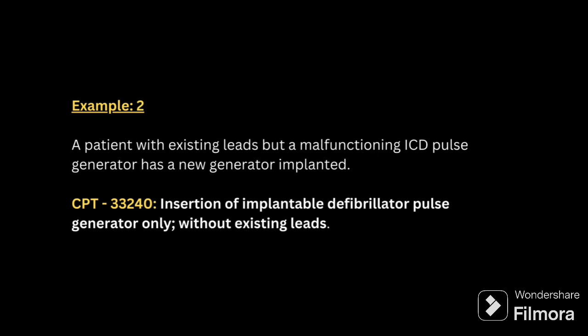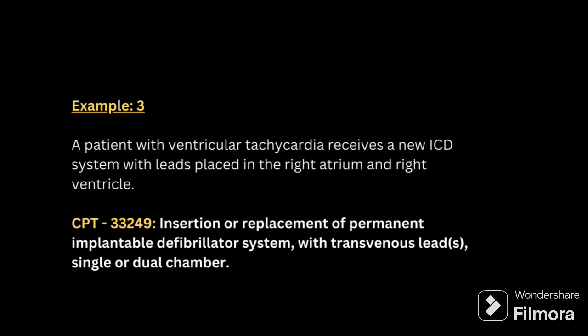Next example: a patient with existing leads but a malfunctioning ICD pulse generator has a new generator implanted. For this, we code 33240 — insertion of implantable defibrillator pulse generator only, without existing leads — because here they are implanting only a new generator without leads. Third example: a patient with ventricular tachycardia receives a new ICD system with leads placed in the right atrium and right ventricle. The code for this is 33249 — insertion or replacement of a permanent implantable defibrillator system with transvenous lead, single or dual chamber.